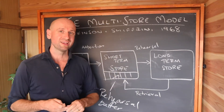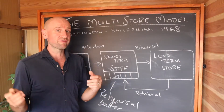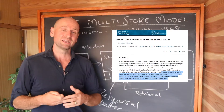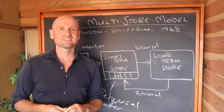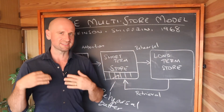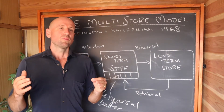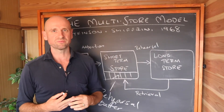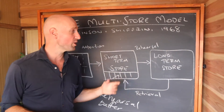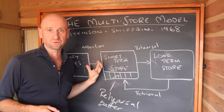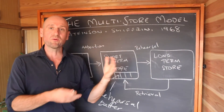Another fun fact: Atkinson and Shiffrin isn't the only multi-store model of memory — it wasn't even the first. Murdoch, a year earlier in 1967, proposed his own multi-store model, though he was actually using studies by Atkinson and Shiffrin from 1965. The idea of separate memory stores goes back even further — William James, the father of American psychology, proposed this idea back in the 1800s, almost a hundred years earlier. What Atkinson and Shiffrin really did was combine these ideas into one unitary framework.